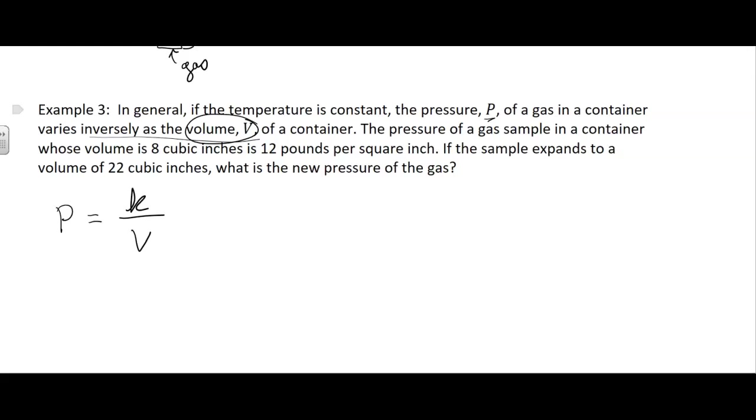Pressure of a gas sample in a container whose volume, so there's the V, that's 8 cubic inches, is 12 pounds per square inch. Pounds per square inch, that is pounds, PPI, I think is what they usually use.